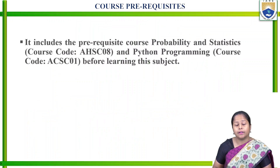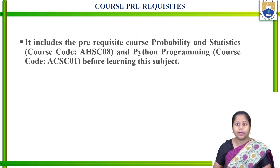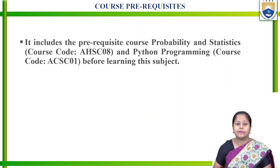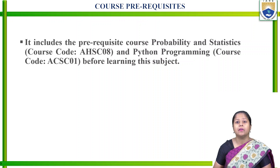There are some prerequisites before starting this course. We should understand probability and statistics, and Python programming. The course code for probability and statistics is AHSC08, introduced in B.Tech Data Science second semester. The Python programming course code is ACSC01, also from the second semester of the B.Tech Data Science course.